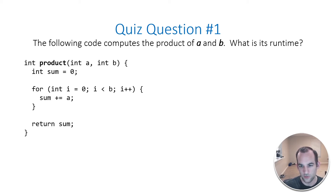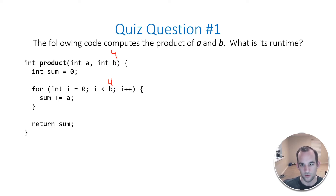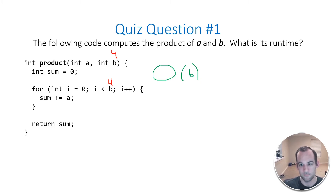Everything is constant time. So this for loop is going from zero to whatever B is. So if B is 4, we go from zero to three — that's four iterations. We're going to add A to the sum each time. So really all we're doing is just going over this for loop of whatever B is. So the answer here is just O(B). You can say O(N), doesn't matter — B is the input here. The answer is O(B) because it's just based on the length of whatever B is.